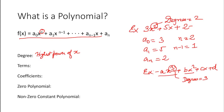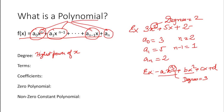Next, let us move on to the next definition, which is terms. Terms — each and every component of a polynomial is known as a term. So a₁xⁿ⁻¹ is a term of the polynomial, a₀xⁿ is also another term, and aₙ is the last term. All these components of the polynomial are known as terms. For example, in 3x² + 5x + 2 we have three terms: 3x², 5x, and 2. In ax³ + bx² + cx + d, the four terms are ax³, bx², cx, and d.